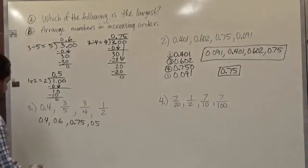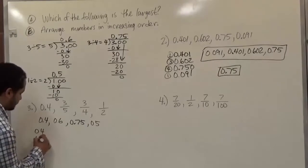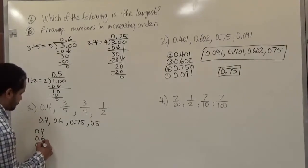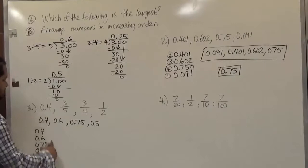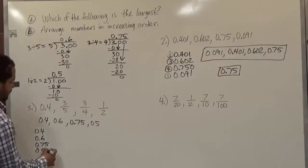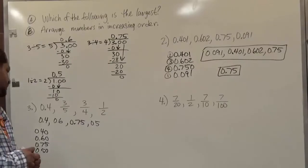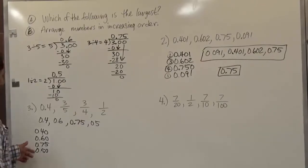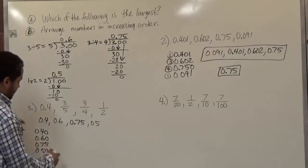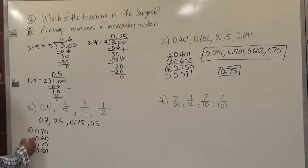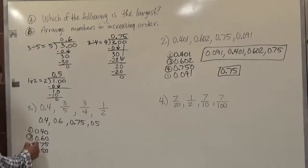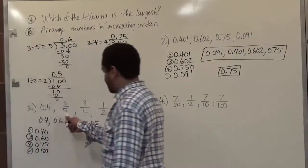Now again we're going to take these numbers and stack them top to bottom. Each number on this list except for 0.75 is going to need the final placeholder. Now it's like comparing change: 40 cents, 60 cents, 75 cents, and 50 cents. If we arrange these in order, the smallest is 40, then 50, then 60, and finally 75.